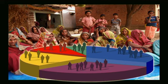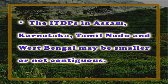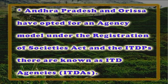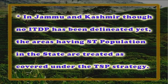Due to the demographic profile of the tribal people in these regions, the ITDPs in Assam, Karnataka, Tamil Nadu and West Bengal may be smaller or not contiguous. Andhra Pradesh and Orissa have opted for an agency model under the Registration of Societies Act, and ITDPs there are known as ITD Agencies, that is ITDAs. So far 194 ITDPs or ITDAs have been delineated in the country. In Jammu and Kashmir, though no ITDP has been delineated yet, the areas having ST population in the state are treated as covered under TSP strategy.